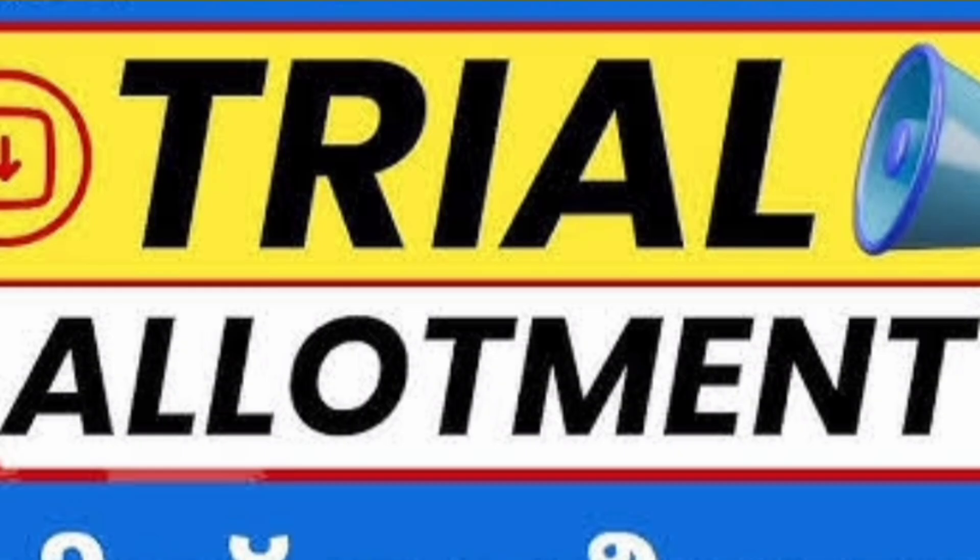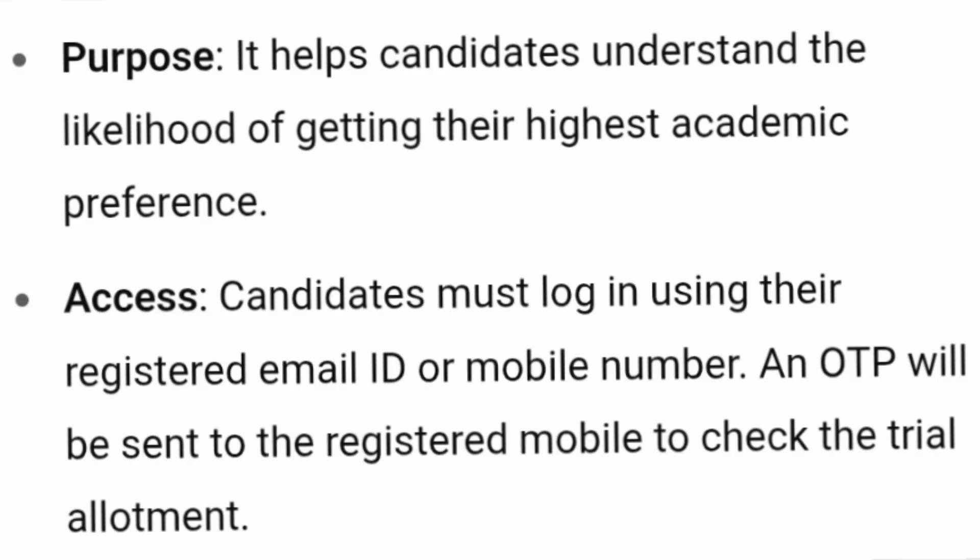The first round of allotment is also called the trial allotment. Its purpose is to help candidates understand the likelihood of which particular academic preference they can get in round one. Candidates participating in the trial allotment must log in using their registered email ID or mobile number, and an OTP will be sent to the registered mobile to check the trial allotment.